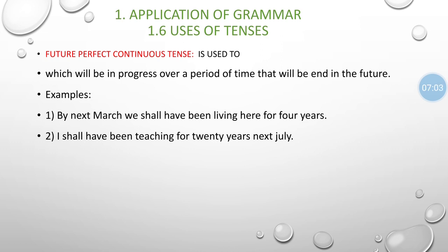For example: 'By next March, we shall have been living here for 4 years' — meaning 4 years of living there will be completed by next March. 'I shall have been teaching for 20 years next July' — 20 years of teaching will have been completed by next July. Such future actions that are partly completed and partly incomplete are indicated by future perfect continuous tense.